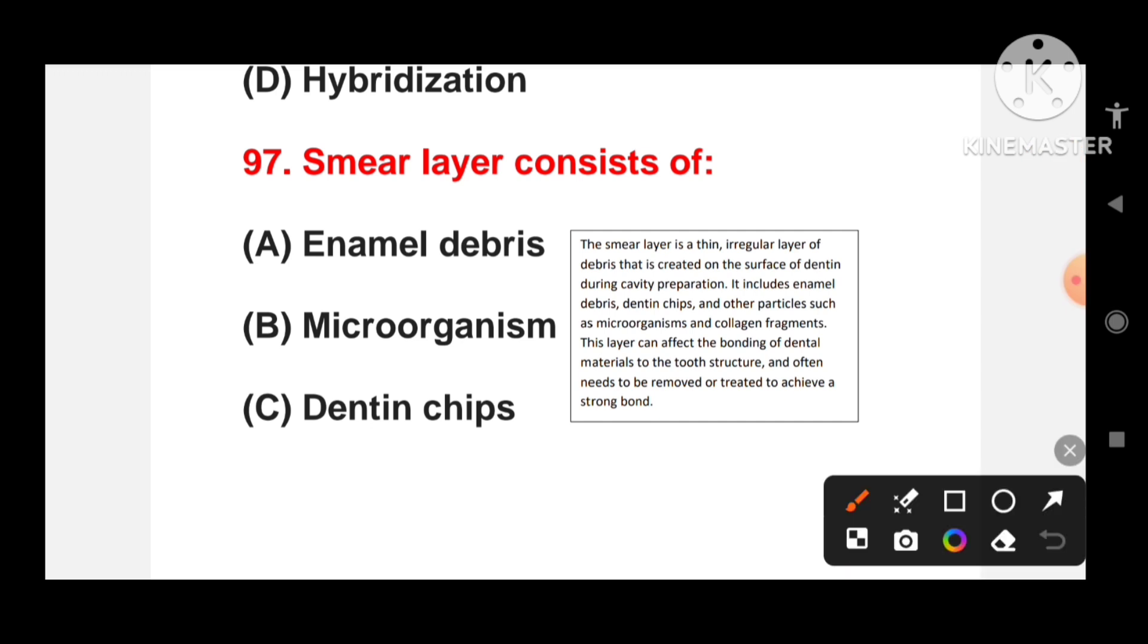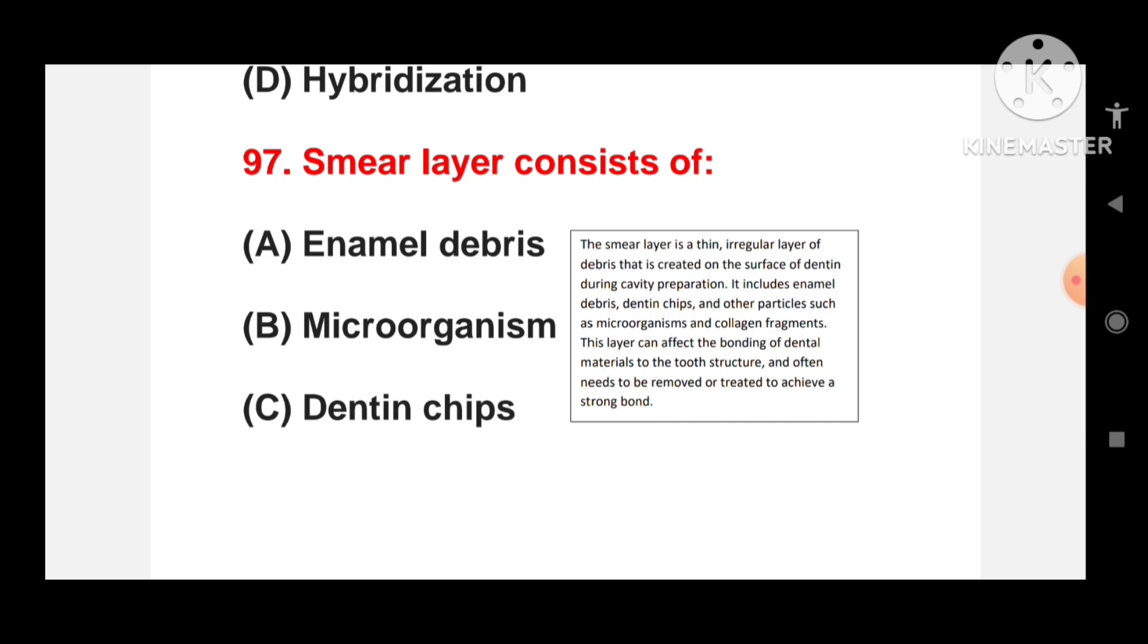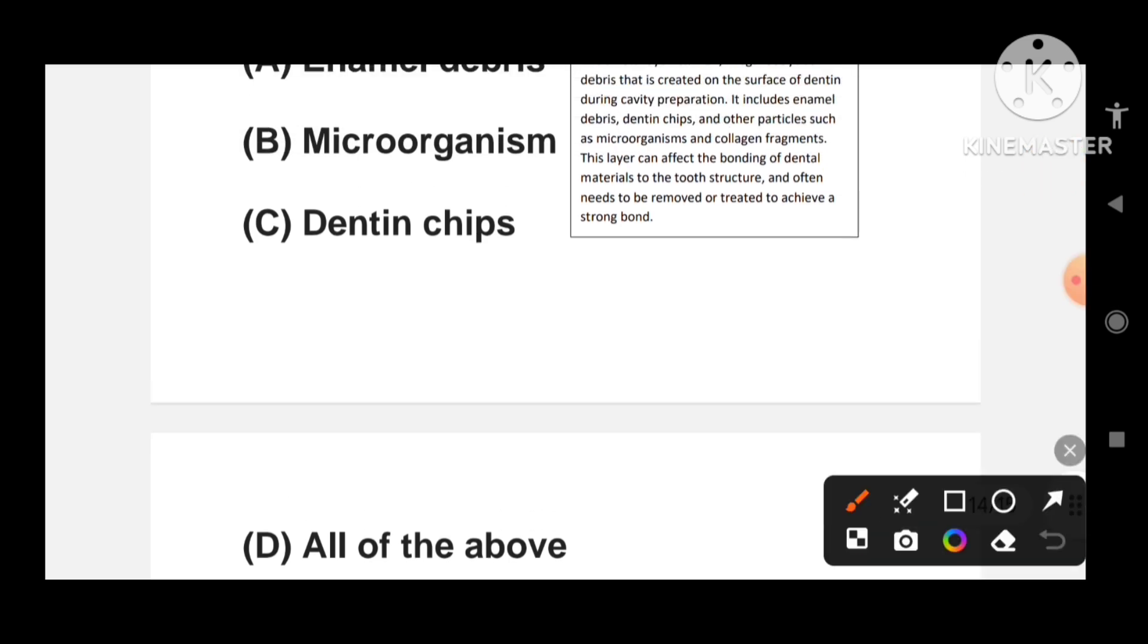Smear layer is a thin irregular layer of debris that is created on the surface of dentin during cavity preparation. It includes enamel debris, dentin chips and other particles such as microorganisms and collagen fragments. This layer can affect the bonding of dental materials to the tooth structure and often needs to be removed or treated to achieve a strong bond.